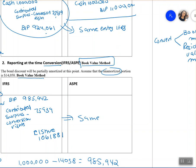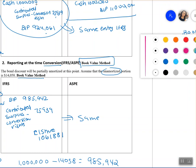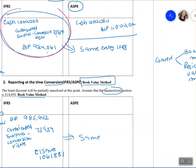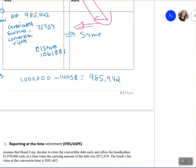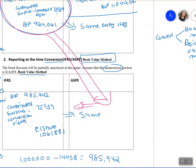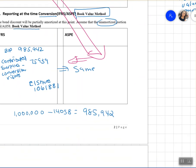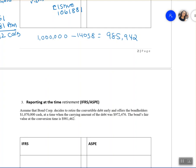Under both ASPE and IFRS the book value method entry is the same, provided the company recorded the contributed surplus at issuance. In the question, they will tell you the company is using the book value method and has a portion assigned to Contributed Surplus. So we've now covered journal entries at the time of issue and at the time of conversion. If they don't convert, they can also retire the bond.